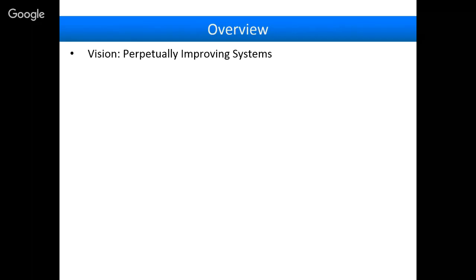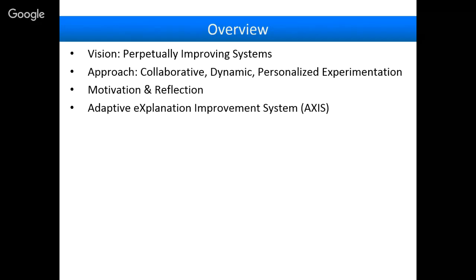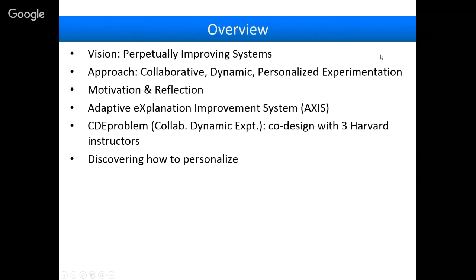So to give an overview: I started with this vision of perpetually improving systems — how can we make something as simple as a problem more like a real teacher? My approach is to rethink experimentation to be collaborative, dynamic, and personalized. I'll give two concrete examples of experiments, then talk about the Adaptive Explanation Improvement System, which crowdsources explanations from learners and runs a dynamic experiment to test which explanations are actually helpful. Then I'll go into a system I tested at Harvard which lets instructors collaborate with researchers to design experiments on different forms of feedback.